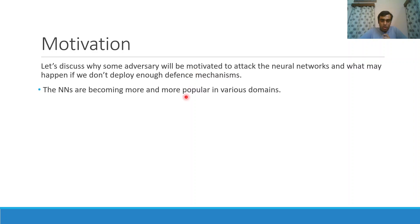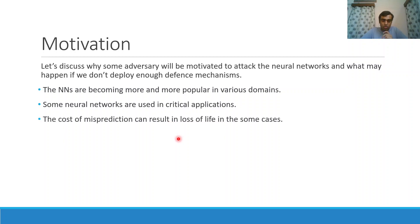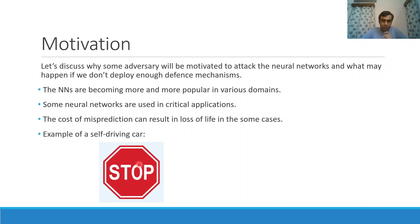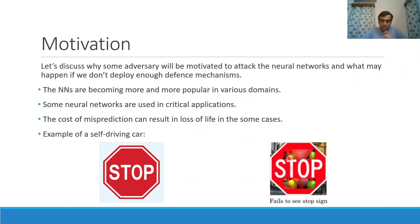Neural networks are becoming more and more popular in various domains and are also used in some critical applications where failure can result in loss of life. Let's take the example of a self-driving car. This is a stop sign commonly found on roads. If the self-driving car detects it and interprets it as a stop sign, then everything is fine. But let's say this is a stop sign board with stickers stuck on them. This is a type of physical attack. If the car fails to see this stop sign, then accidents may happen.